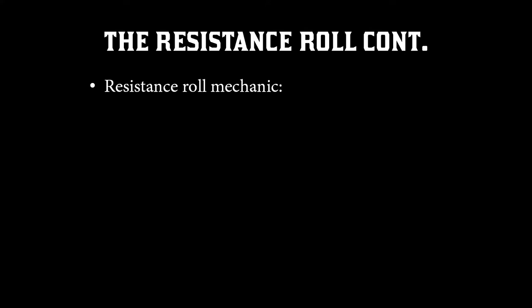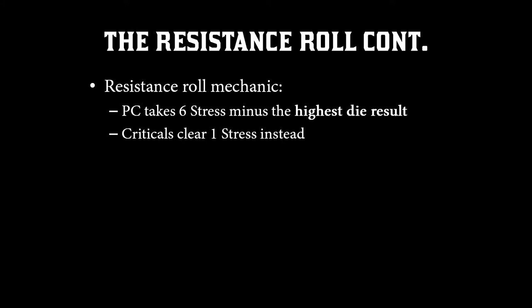Continuing the resistance roll, the mechanic is as follows: the PC takes six stress minus the highest die result. So you're rolling xd6, where x is the attribute selected based on the consequence, and then you take six and subtract the highest die result. If you get two sixes — a crit — then you clear one stress instead of adding stress. So if you roll a six, your PC resists and takes zero stress, but if you get two sixes, you crit and actually clear one stress instead.